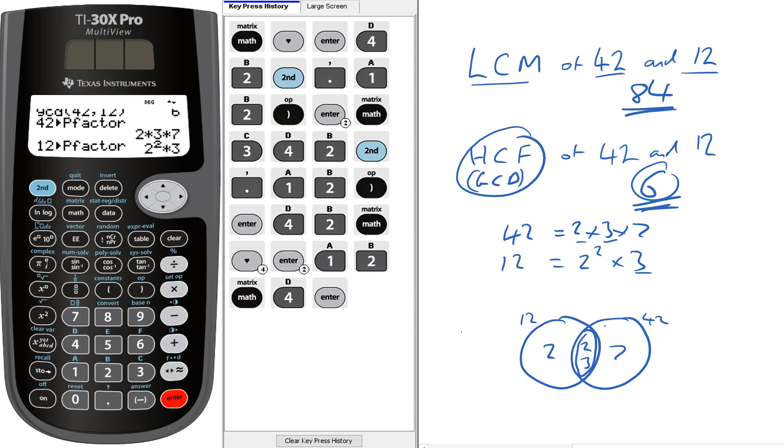And the lowest common multiple, so all of them times together. Well obviously this lot comes to 42, because 2 times 3 times 7 is 42. So it's going to be 42 times 2 is 84. And so that's where the 84 comes from, it's where the 6 comes from.